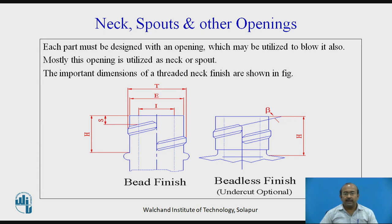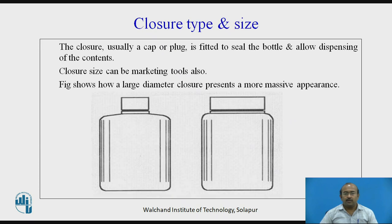Bead finish and bead lace finish — how they look. Bead lace in the sense of an undercut option — these two geometries can be seen. Closer type and size: the closer, usually a cap or plug, is fitted to seal the bottle and allow dispensing of the content. Closer size can also be a marketing tool. The figure shows how a large diameter closer presents a more massive appearance.